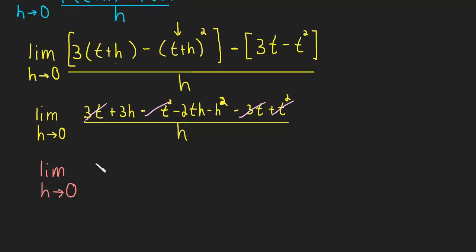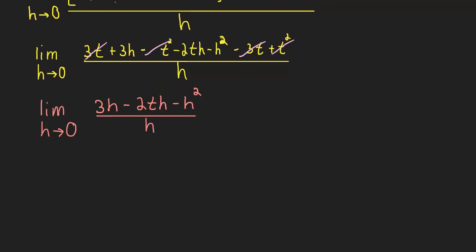So what do we have left here? We have a positive 3h, a minus 2th, and a minus h squared, all divided by h. Well, it looks like we can factor an h out of the numerator. So let's go ahead and do that. And we're left with 3 minus 2t minus h, all times by h. So I factored an h out.